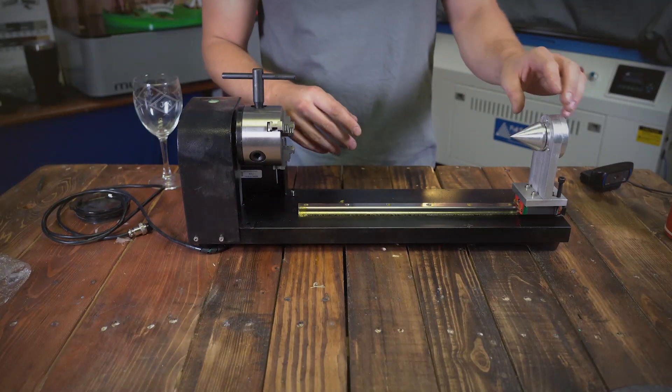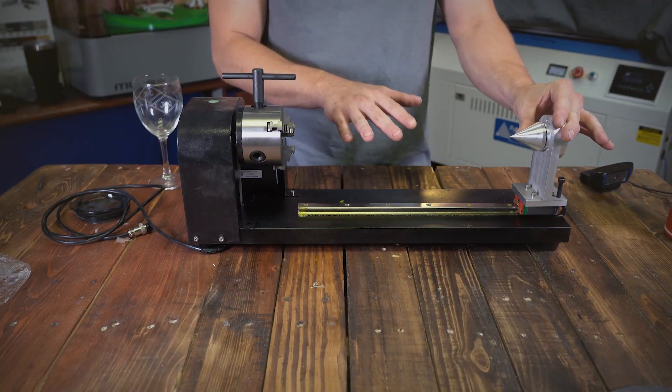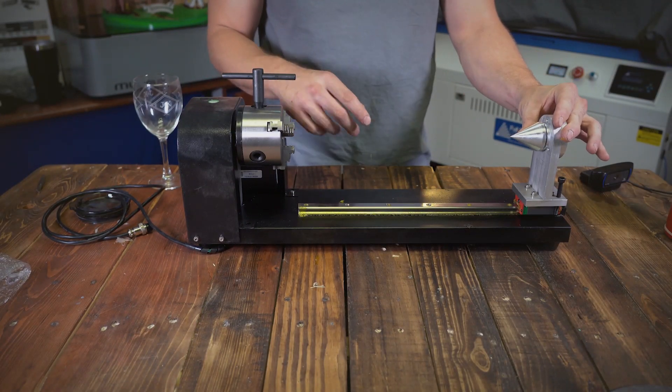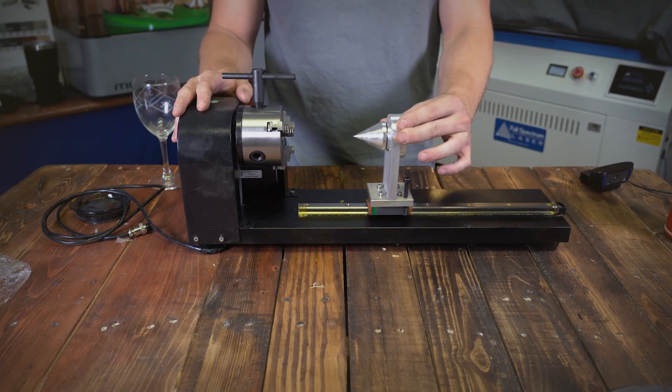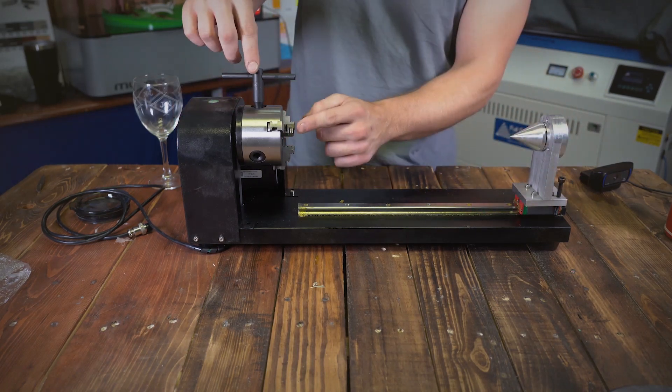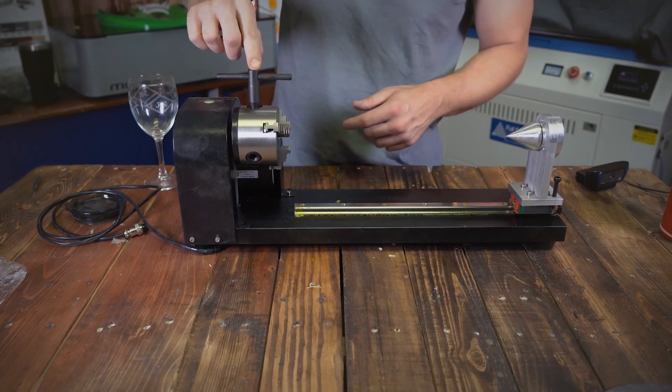Now we have the chuck rotary. There are two adjustments that can be made for your application. On the chuck rotary, you can slide this and you can adjust the actual chucks via this.